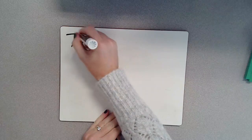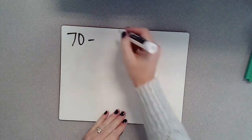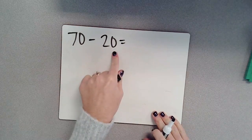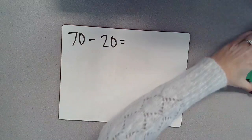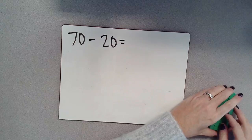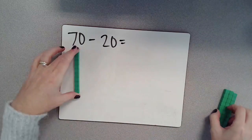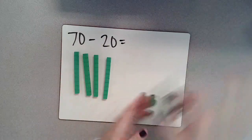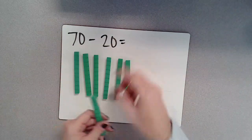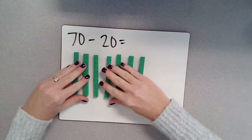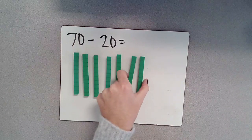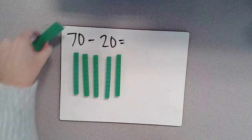For our first subtraction, we're going to say 70 minus 20. So 70 take away 20. First, I'm going to have to find 7 10s or 71s. I've got 10, 20, 30, 40, 50, 60, 70. That's how much I'm starting off with. And then I'm going to take away 20 or 2 10s. Take those away.